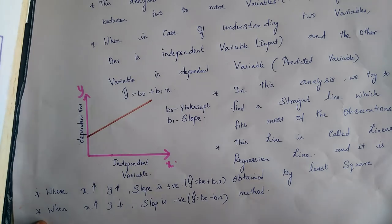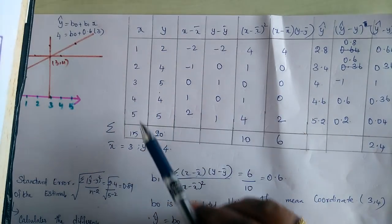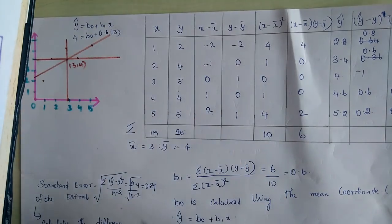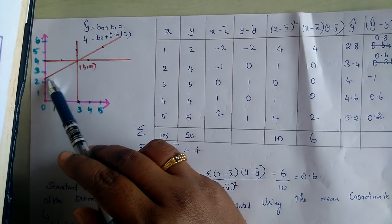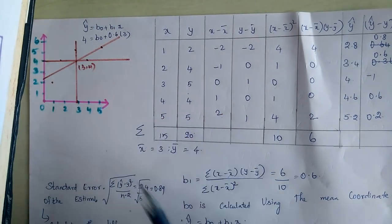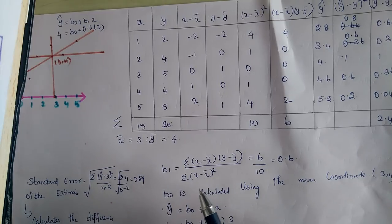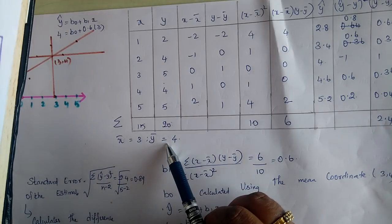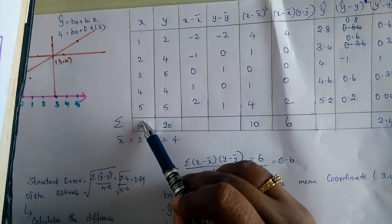This procedure is called the least squares method. For simplicity, let's say we have five observations — five x and y value pairs. We need to find the slope b1 and y-intercept b0. The y-intercept is the point at which the line crosses the y-axis. The x-bar and y-bar are the mean values of x and y respectively. Summing all x values gives 15, divided by 5 observations equals x-bar of 3.